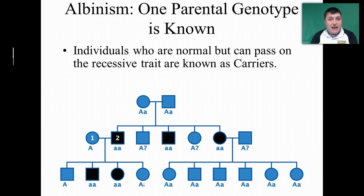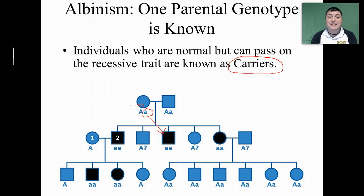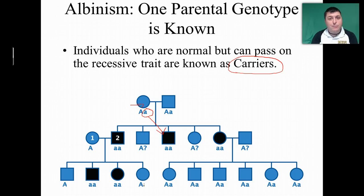In a recessive pedigree, individuals that appear normal but can pass the recessive allele to the next generation are known as carriers, because they carry the trait. They don't show it themselves. So a carrier is another way to refer to someone who is heterozygous — they are showing one phenotype but carrying the trait we are exploring. Pedigrees can be a useful tool in tracing human traits from one generation to the next.